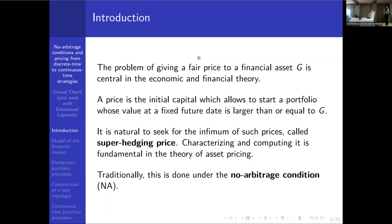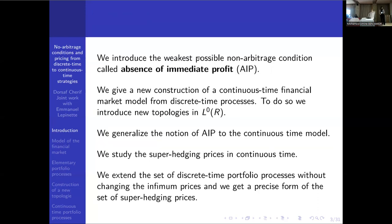Characterizing and computing super hedging prices is fundamental in the theory of asset pricing. It is habitually done under the no arbitrage condition. What we will do here is introduce the weakest possible no arbitrage condition — we call it absence of immediate profit. Then we will give a new construction of a continuous time financial market model from a discrete time process.